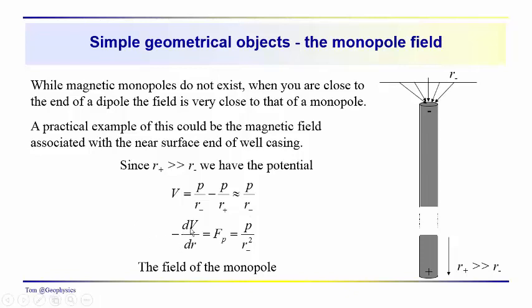And then we're taking the negative derivative of the potential. We get the magnetic field intensity of the pole. That would be equal to P over R minus squared. So we have an inverse square law, much like we did when we were working with gravitational fields.